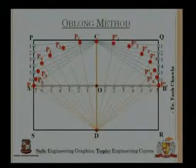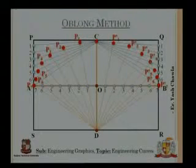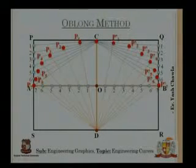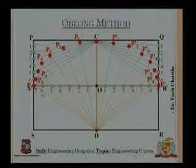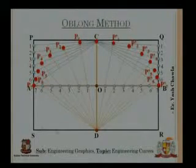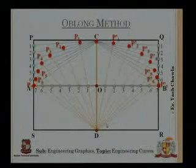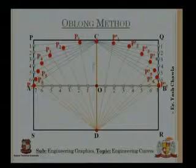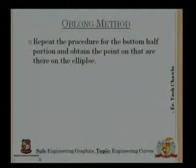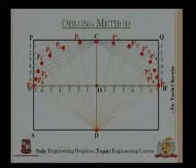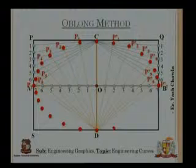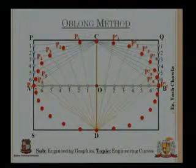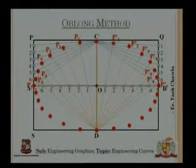On the right-hand side I get P1', P2', P3', P4', P5', P6', and P7' by repeating the same procedure. For the lower half, I divide AS and BR into seven equal parts and pass lines through D and C just as before. This gives me all the corresponding points on the lower portion of the ellipse. Now I have all the points on the ellipse.